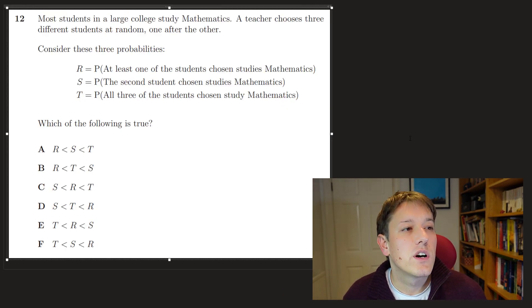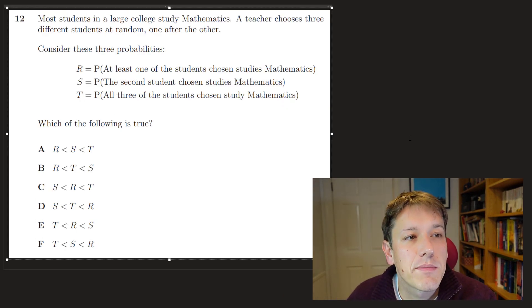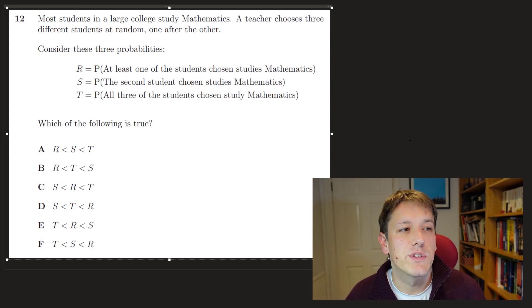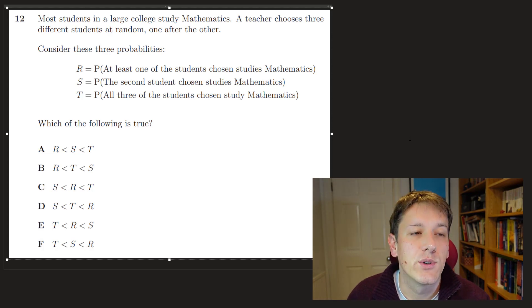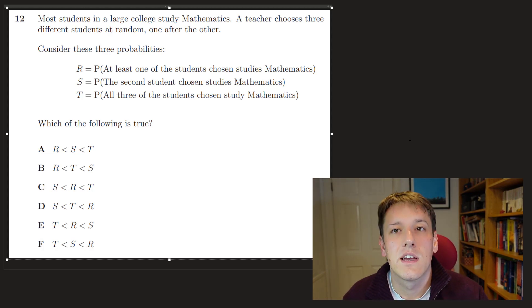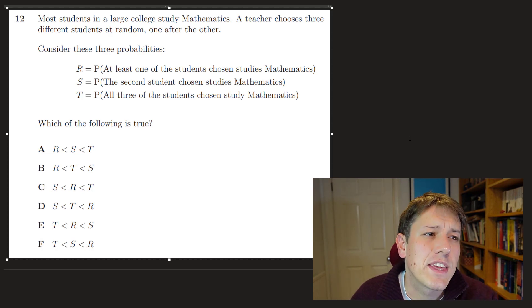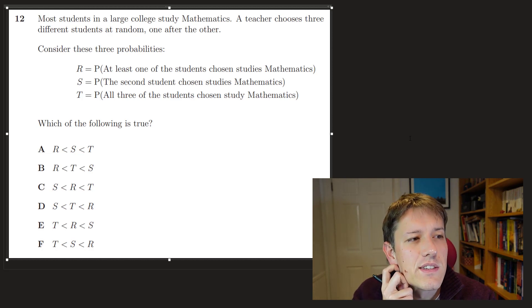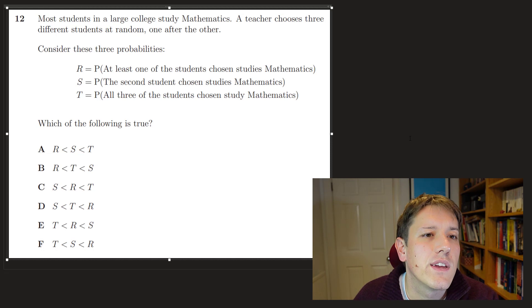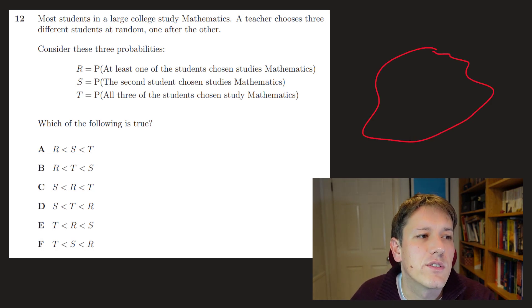Okay, so in question 12, most students in a large college study mathematics. A teacher chooses three different students at random one after the other. Consider these three possibilities, and we want to basically write these probabilities in order, which is the lowest and which is the highest. So you could assign some numbers and try to actually work out some probabilities here, but we shouldn't need to do that.